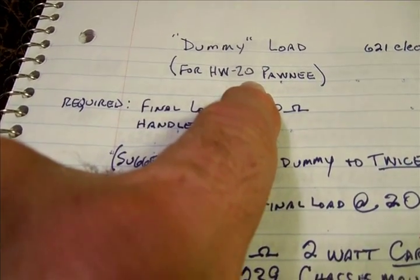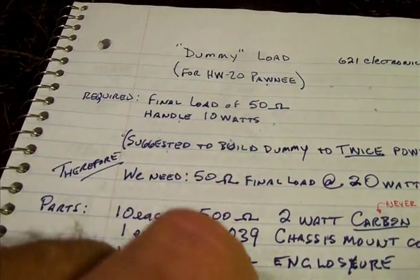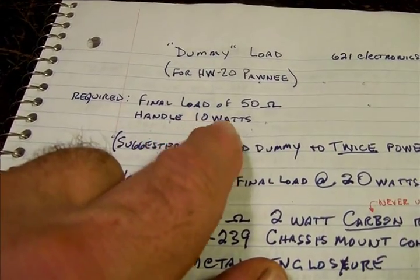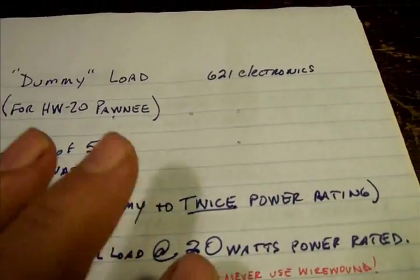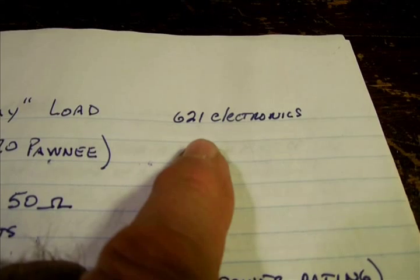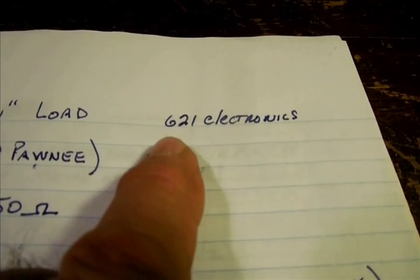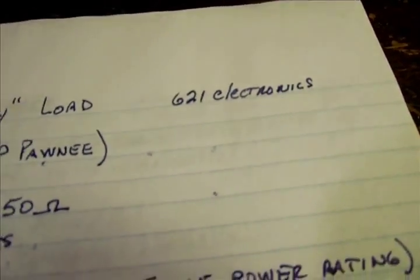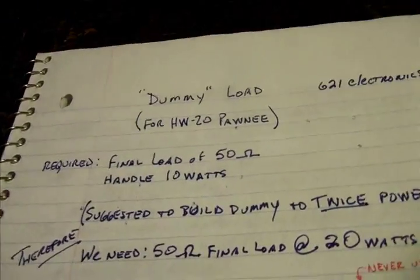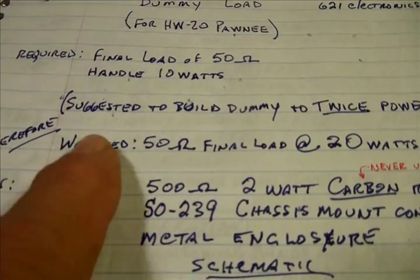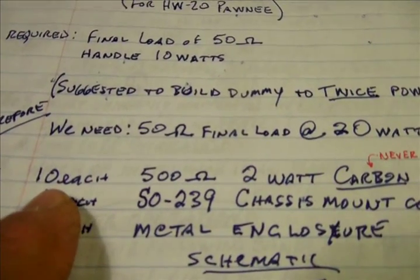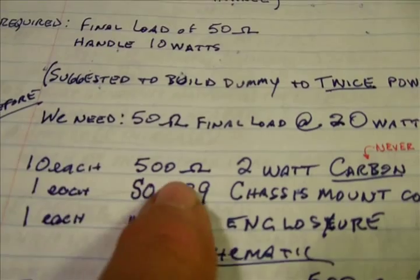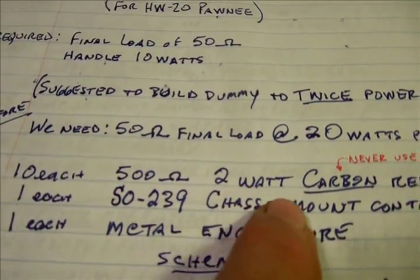However, on continuous wave it could go higher so I made it up to, it could handle 20 watts. This particular design came from the internet. This is the website 621 Electronics. Their original design was, excuse me, 10 transistors, 500 ohm, 2 watts each.